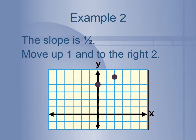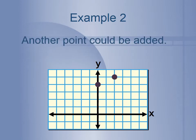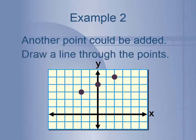Now we have another point. To add a third point, we go in the opposite direction from the y-intercept: down 1 and to the left 2. That gives us our third point. Now we draw a line through the points — there's our line.